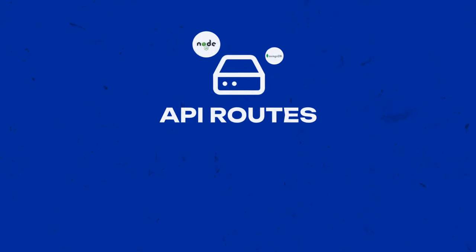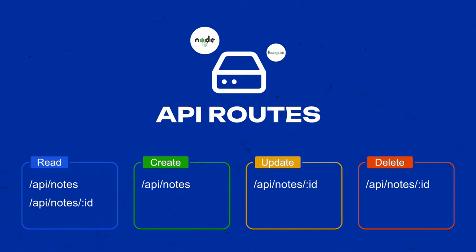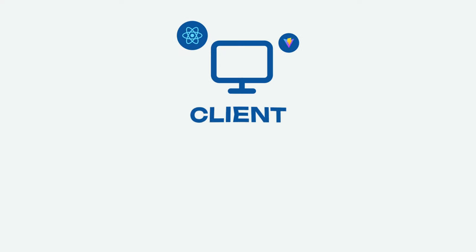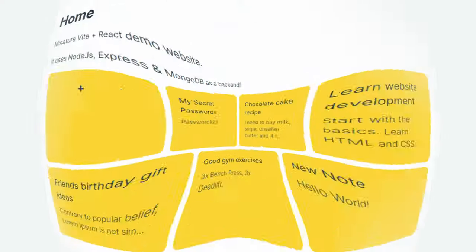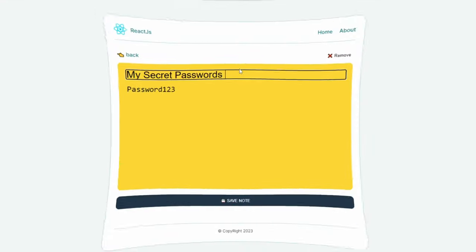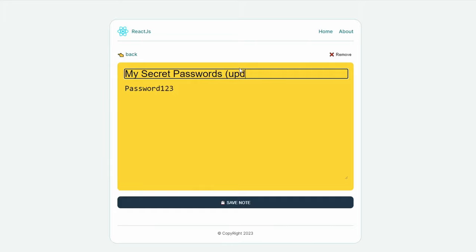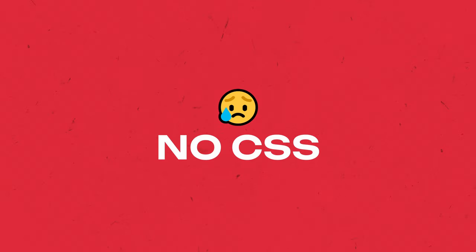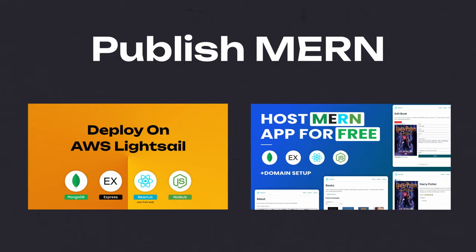On the backend, we'll develop five API endpoints for data retrieval, specific record queries, record updates, and deletions. On the frontend, we'll focus on displaying data, adding new records, and updating existing ones. We won't cover CSS styling in this tutorial. I've also covered how to publish a MERN project on AWS, Netlify, and Render in previous videos.